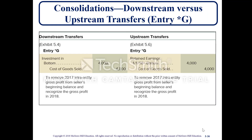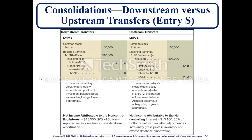For consolidation, downstream versus upstream transfers differ in entry G. Both entries remove the 2017 intra-entity gross profit from the seller's beginning balance and recognize the gross profit in 2018. There are also differences in entry S depending on whether the transfer is downstream — from parent to subsidiary — or upstream — from subsidiary to parent.